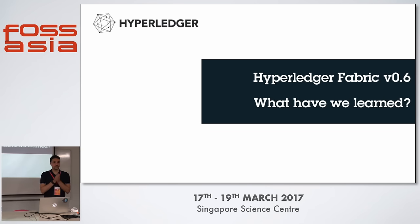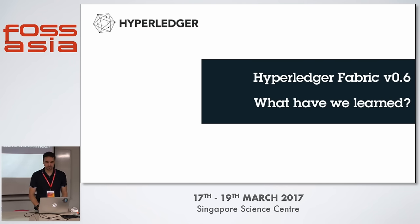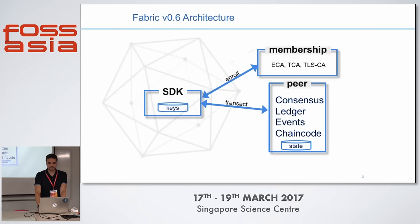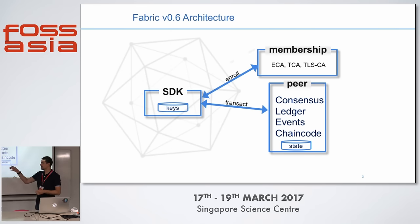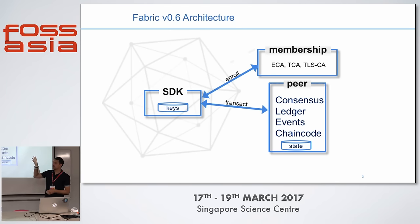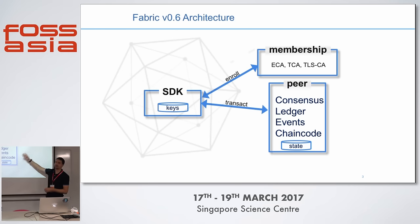Before going to version 1, just a quick recap of why we decided we are ready to move to the next version. What we've learned from version 0.6 — there are a number of limitations. That's the current architecture of version 0.6. As you can see, there is an SDK that implements the client, there is a membership service which is a kind of centralized service, and there is a peer in the network which is doing lots of stuff — it's quite busy.